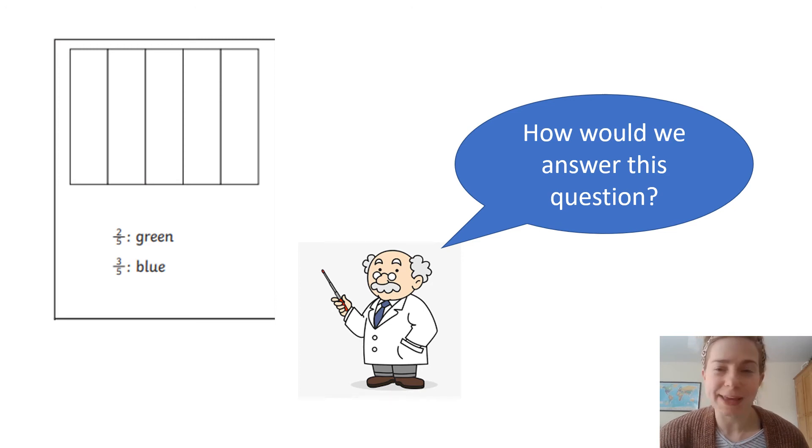On your home learning sheet this week, on the Lark Hall website, you have some questions that have been set about finding fractions of shapes, and there will also be some on Seesaw for you to complete too. So, for this particular question, you're being asked to shade two-fifths of this bar green and three-fifths blue.